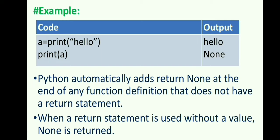Python automatically adds return None at the end of any function definition that does not have a return statement. When a return statement is used without a value, None is returned.